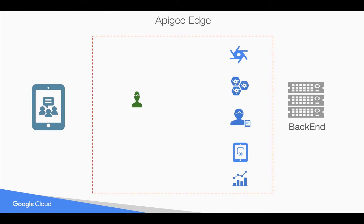When you have API team members who are developing APIs, maintaining APIs, and managing these APIs, you would like to assign some of the asset operations to some of the team members. For example, creating and deploying API proxies to someone, and creating API proxies to others — to control the access of who can do what in Apigee Edge.